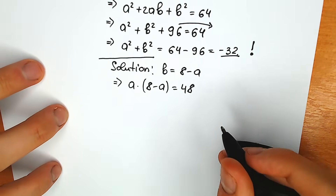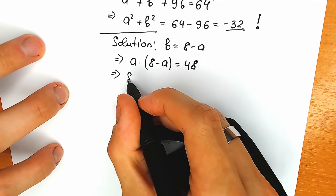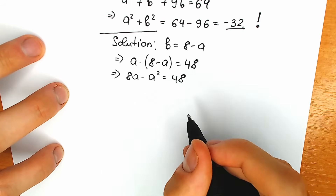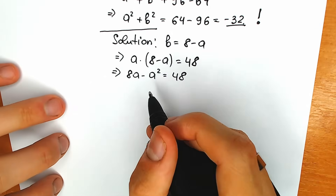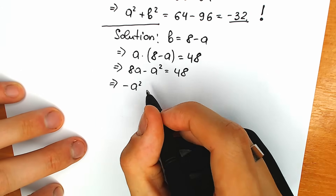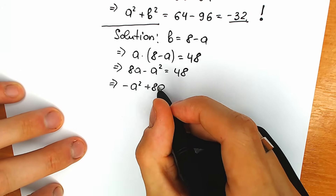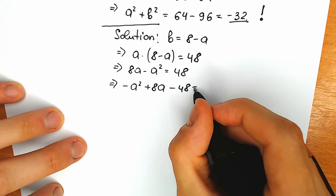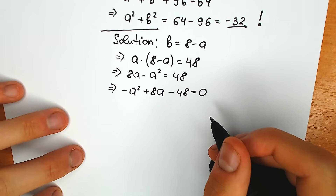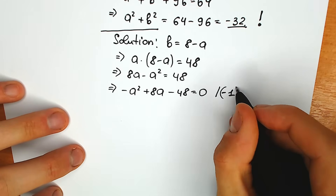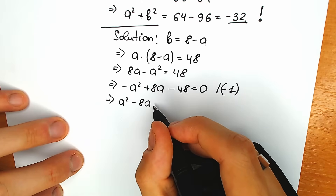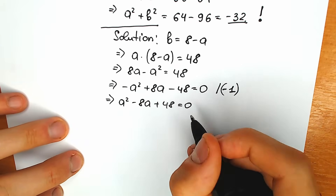Let's simplify and solve this equation. So we have 8a minus a squared equal to 48. It looks like this is a quadratic equation, but we need to change the order a little bit. So on the first position minus a squared, next plus 8a, minus 48 equals 0. For better understanding, let's multiply by minus 1. As a result we have a classic quadratic equation: a squared minus 8a plus 48 equals 0.